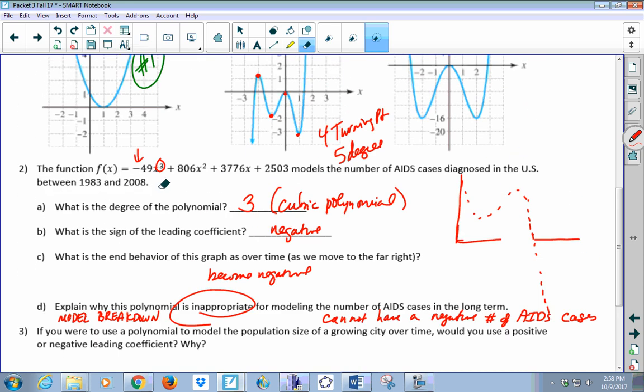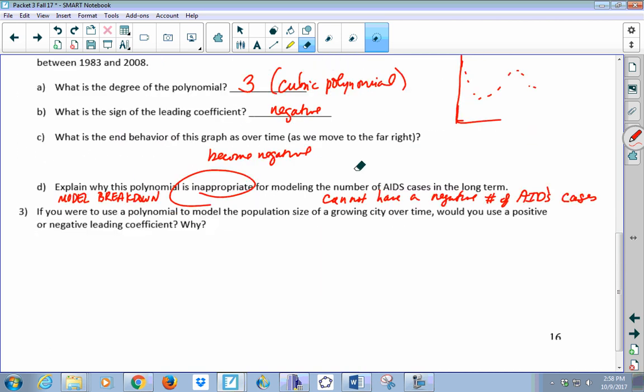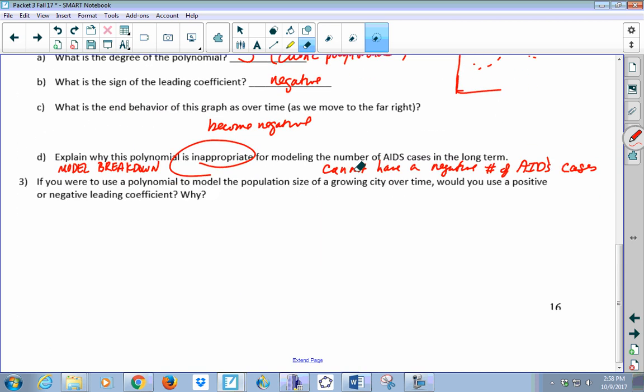So for this time period, 1983 to 2008, the model might be fabulous. This cubic polynomial may be really fantastic for modeling the scatter plot between these years. But over the long haul, it's not going to make sense as time goes out further or beyond 2008.